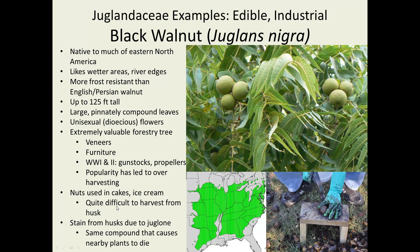This nut is very popular in ice creams and cakes. It has a stronger flavor than English or Persian walnut, but it's still very delicious. This tree is used industrially for veneers and furniture. Before we had high-strength metals, it was used to make propellers in early airplanes and in gun stocks. That popularity has led it to be somewhat overharvested.